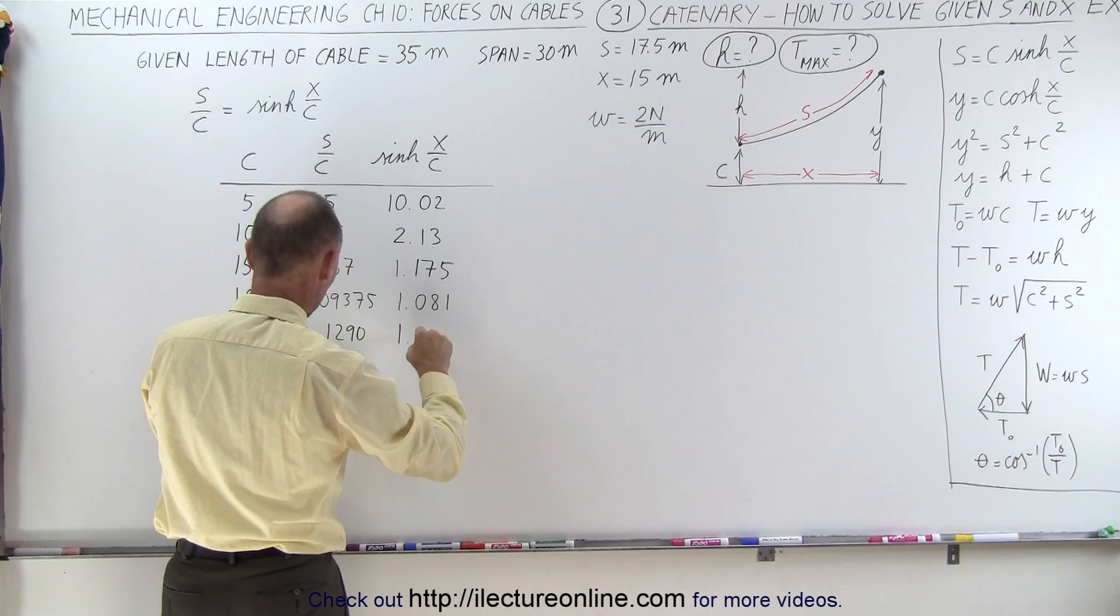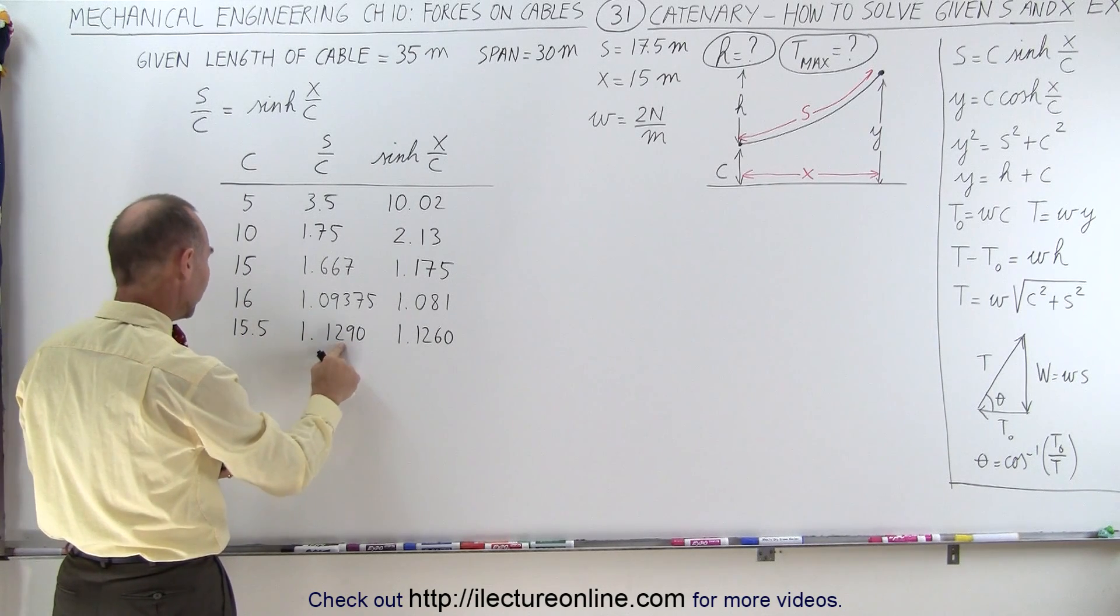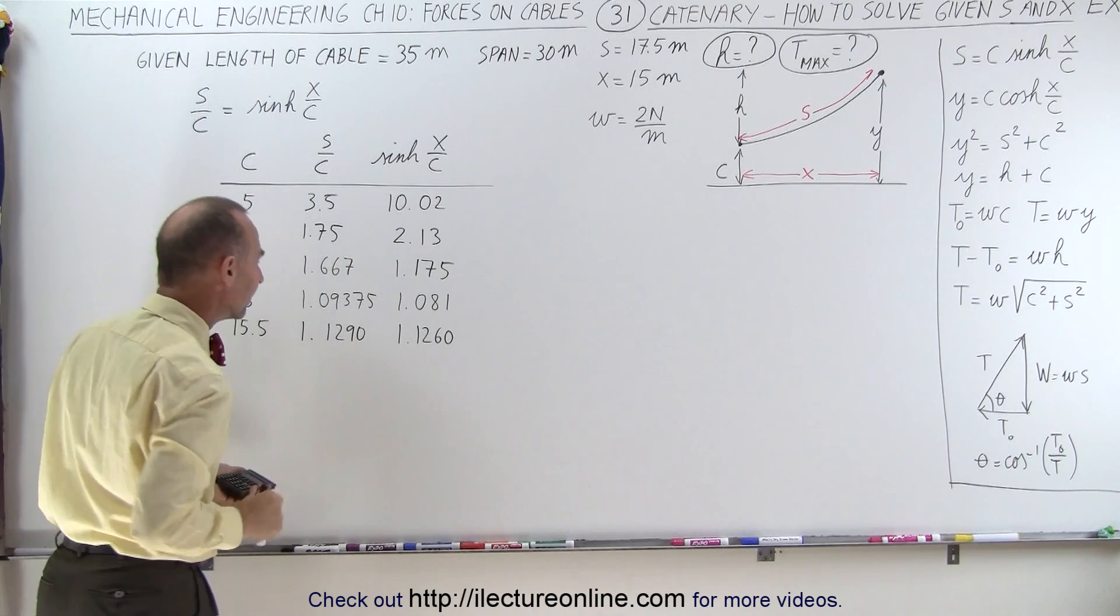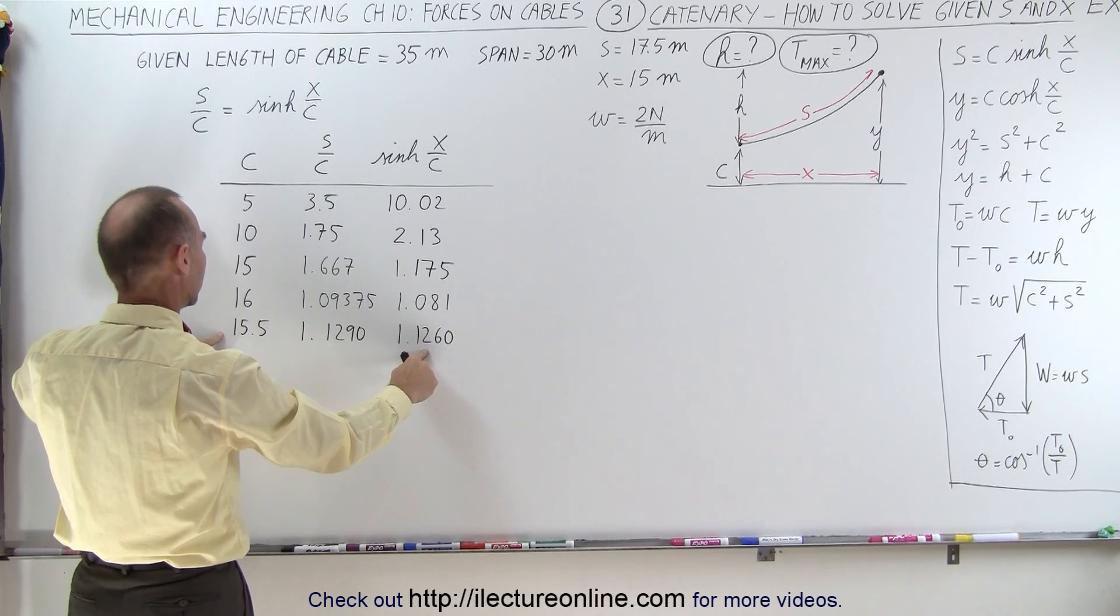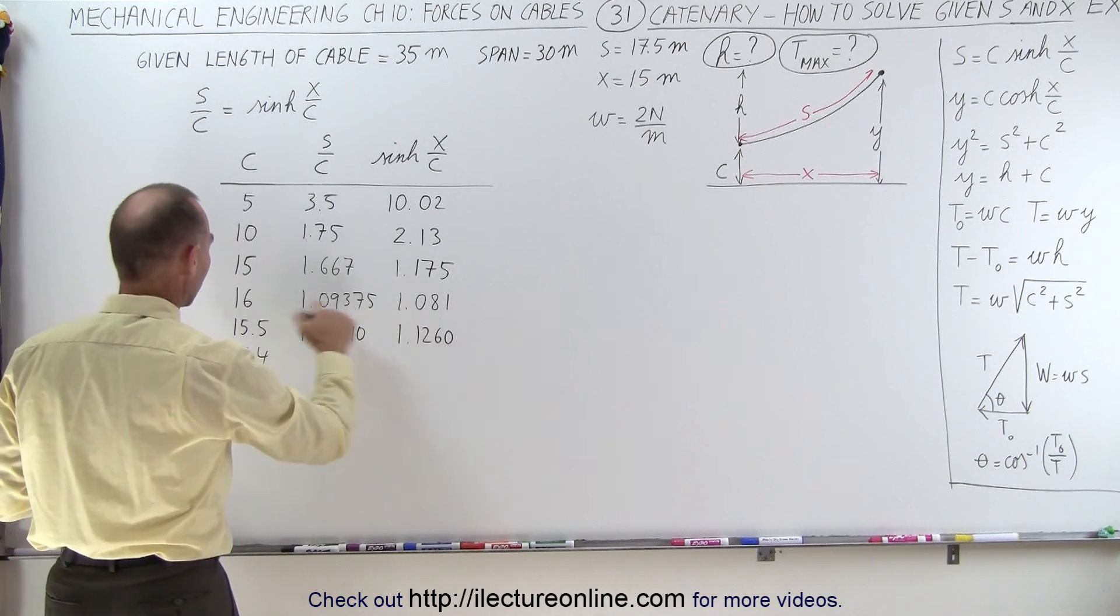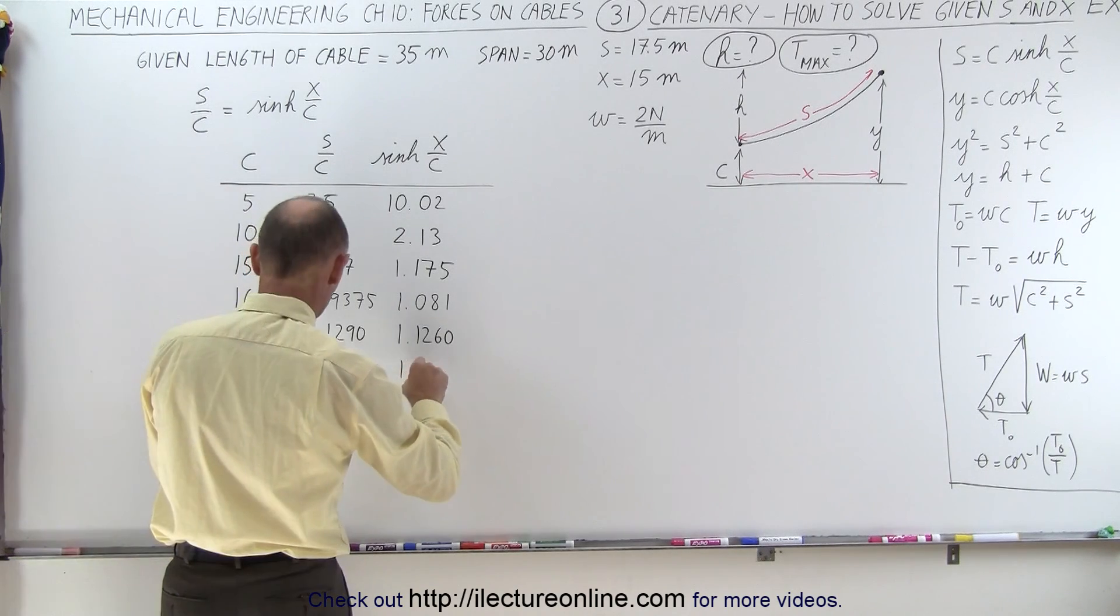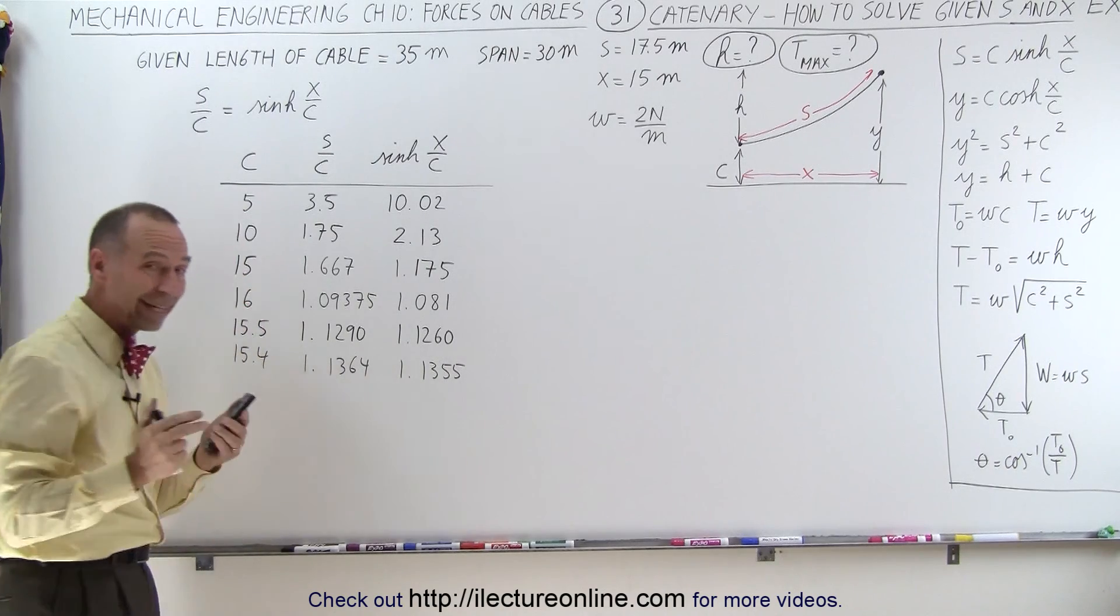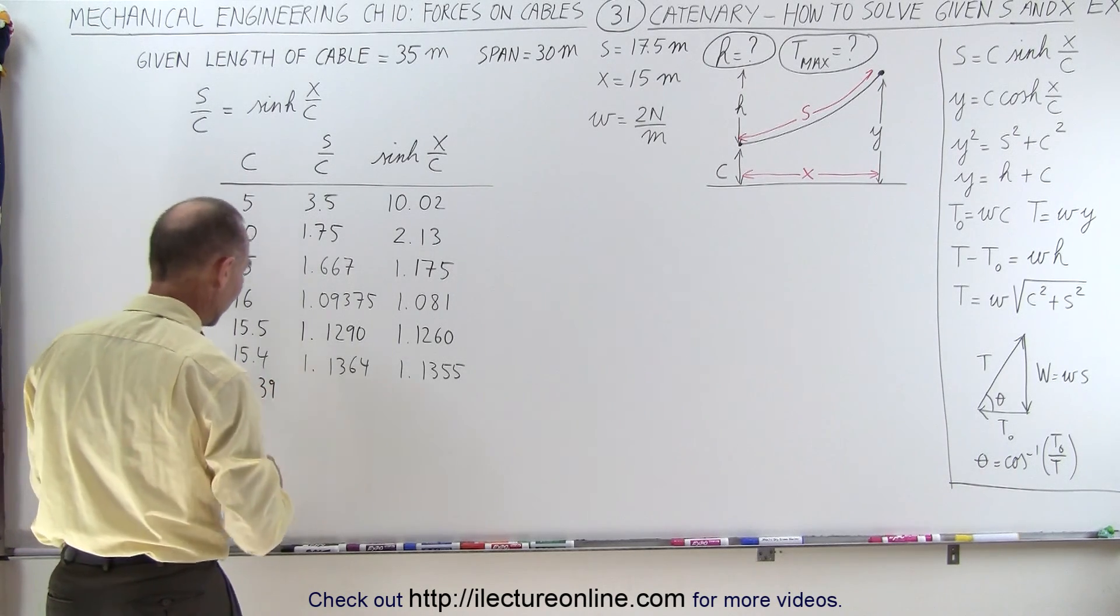Here we get 1.1260. At 16 we were smaller than this. At 15.5 we're still smaller than this. This is smaller than that. So we need to come down. How about 15.4? Sometimes it's hard to know which way to go, but here we're smaller. We went to 15.5, it's still smaller. We need to keep dropping to 15.4. We get 1.1355. Here we're still smaller, but we're getting really close.